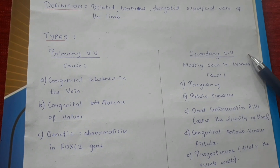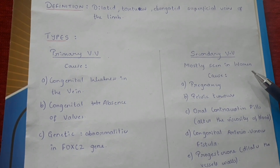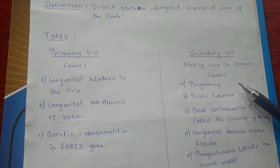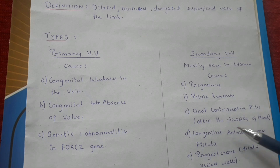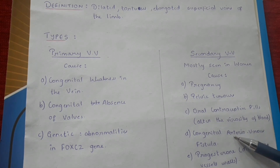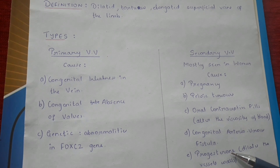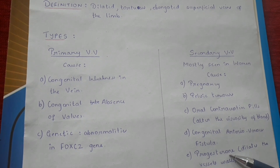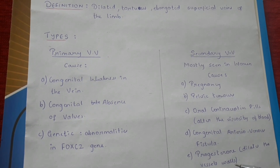Secondary varicose veins are mostly seen in women because of the following causes: pregnancy, pelvic tumours, oral contraceptive pills (which alter the viscosity of the blood), congenital arteriovenous fistula, and progesterone — which dilates the vessel walls.